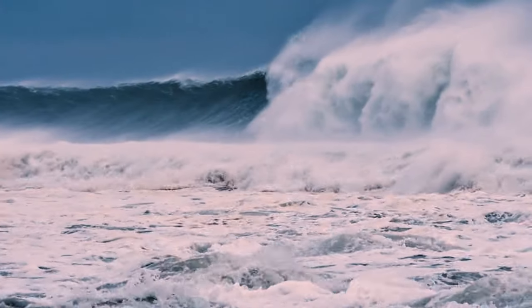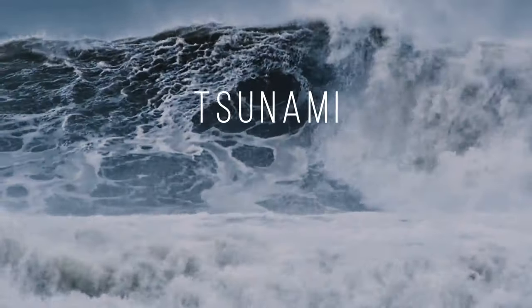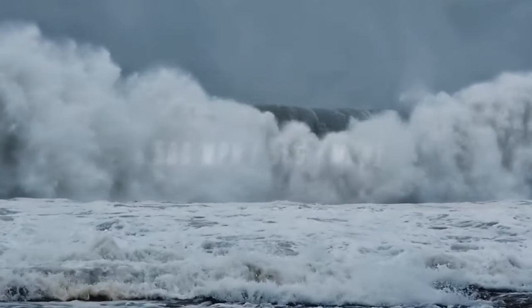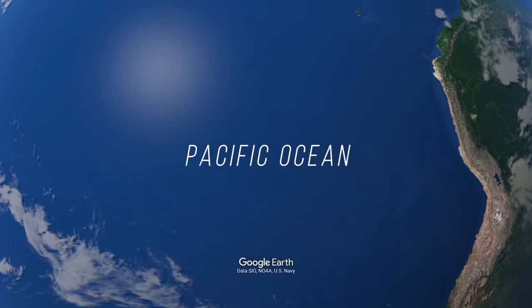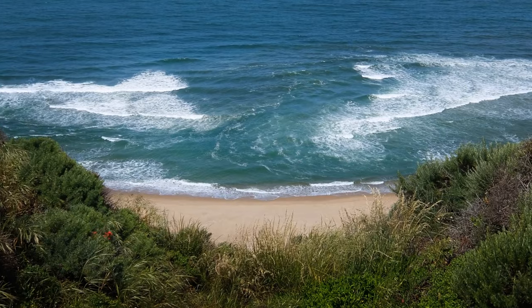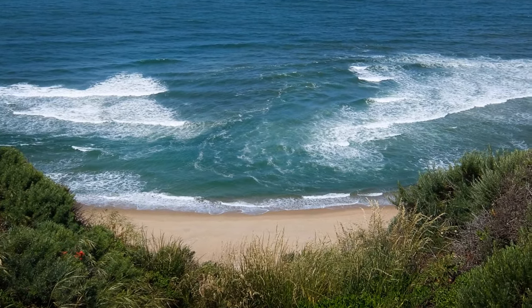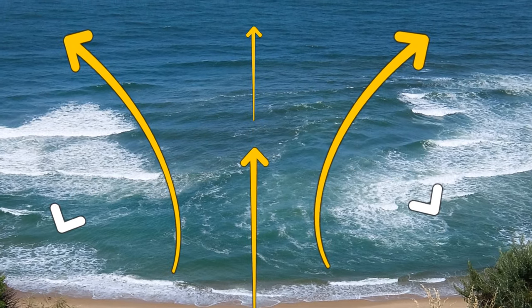A tsunami is formed when there's an earthquake underwater, and it can hit the coast at 500 miles per hour. It's mostly a Pacific Ocean thing, but why risk it? If there's a channel of choppy water on the beach, stay away. There might be a rip current under the surface that can be extremely dangerous.